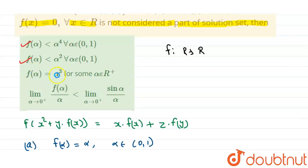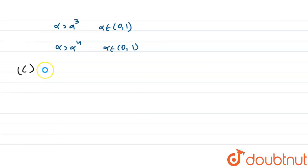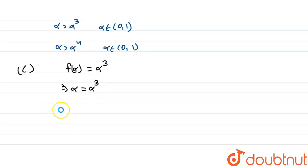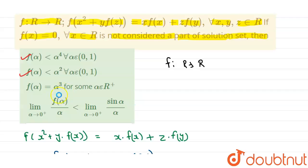We will check option C. Option C states that f(α) = α³ for some α belonging to the positive real numbers. Since the given relation satisfies the linear relation, for some values of α, f(α) = α³. Setting α = α³, this relation holds when α = 0, α = −1, and α = 1. So option C is correct.